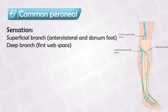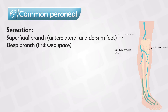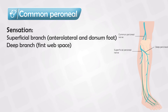Next, we have the common peroneal nerve, also known as the fibular nerve, and this nerve has two parts: superficial and deep. The superficial part provides sensation to the dorsum of the foot, which interestingly does not include the web space between the hallux and the second digit. That part is supplied by the deep peroneal nerve, and this is very important for examination as well as clinical exams.